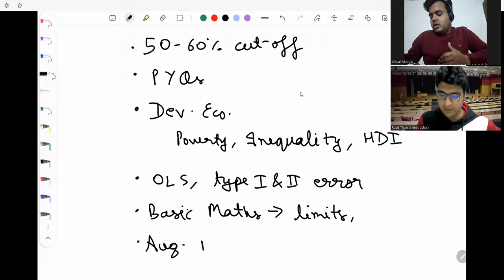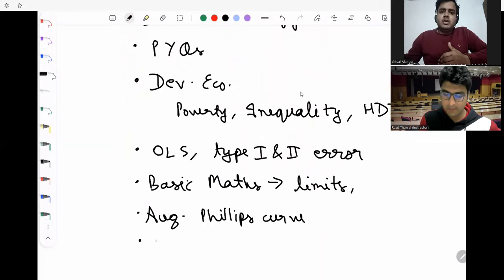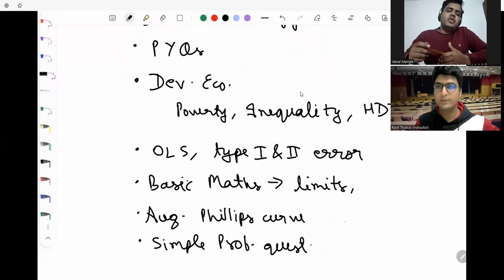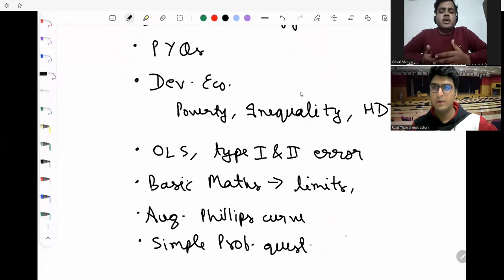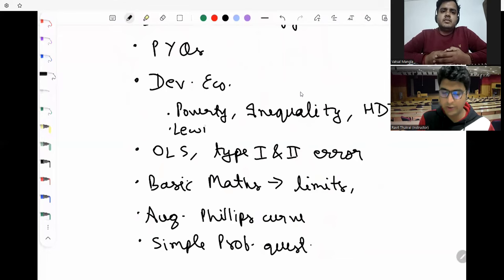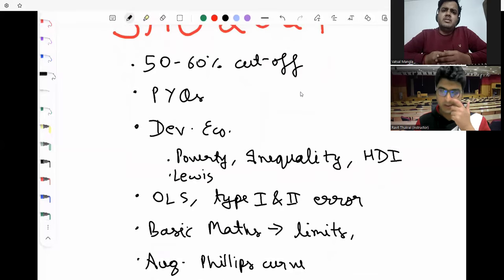For stats, simple probability questions. Augmented Phillips curve, then for stats you can refer to simple probability questions, Bayes rule. And if you're doing the past years, you'll get an idea what level they expect and what kind of questions come in the exam. The 2023 exam was almost like previous year questions. The level was same.